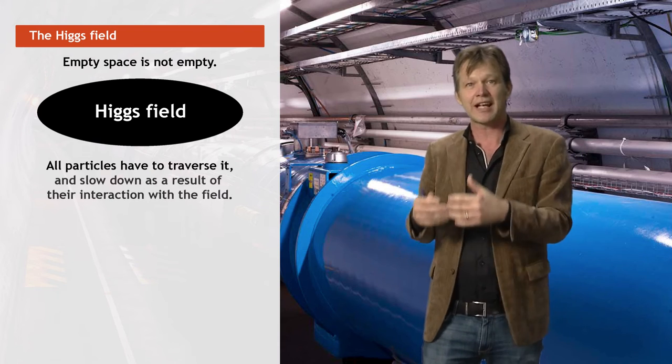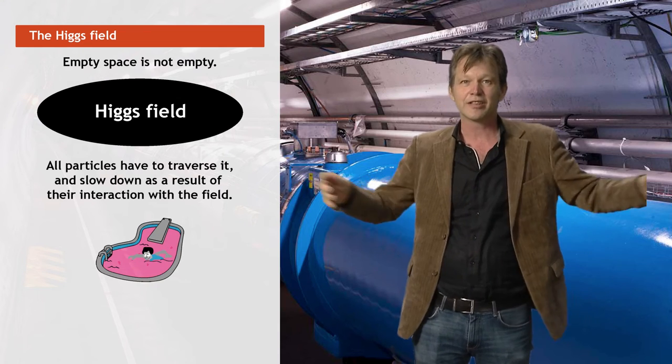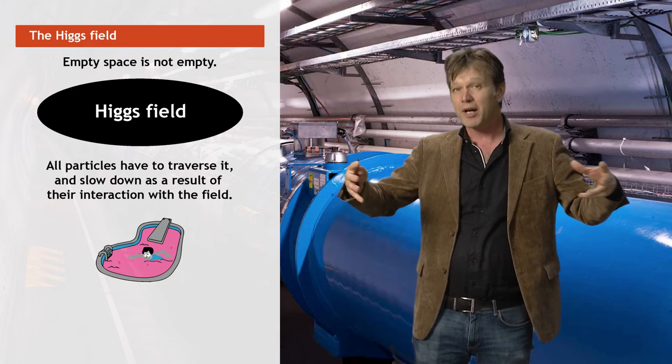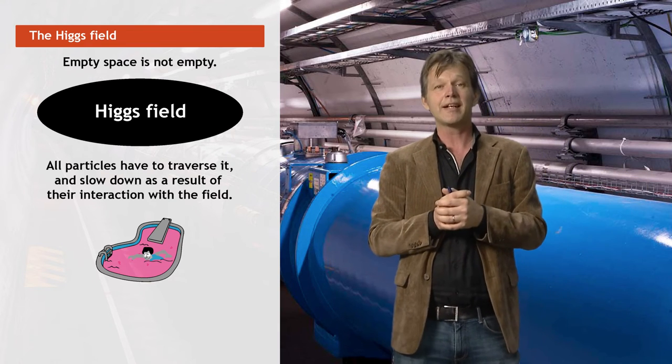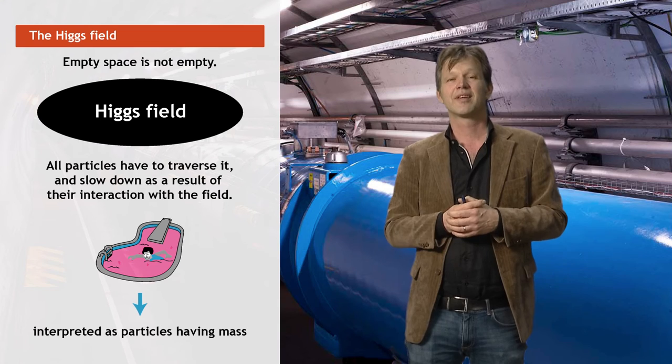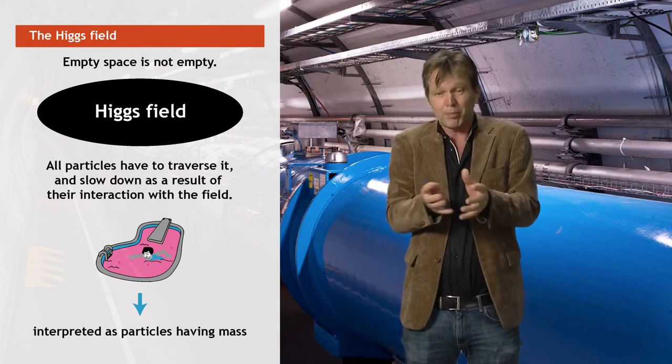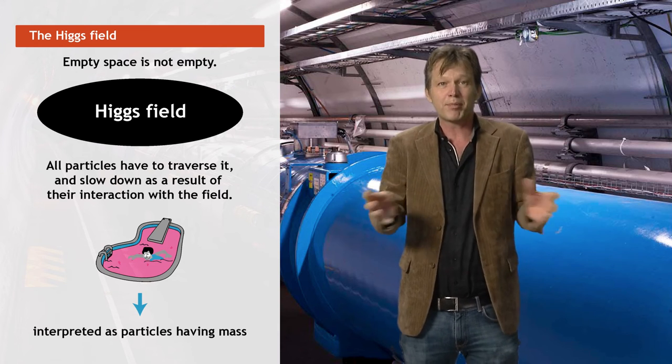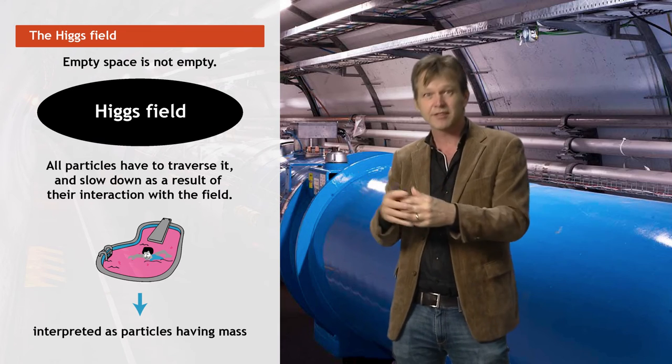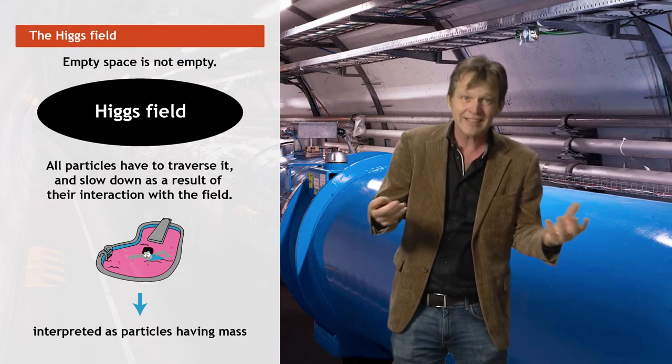And by traversing it, they interact with this background field and they effectively slow down. It's like they have to traverse a fluidum or a syrup or a substance. And they slow down. And in that way, the particles don't move anymore with the speed of light. They slow down. And we interpret this as the particle has obtained a mass. So the mass of the particles is not due to the fact that they have an intrinsic mass or property called mass. No. The mass of a particle is brought about by the interaction of the particles with this substance, with this background field, with the Higgs field. And the larger the interaction with that field, the larger the mass of the particle is.